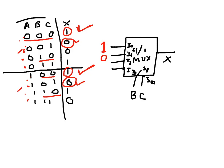For I2, where B is 1 and C is 0, I look at the two corresponding rows. The output is 0 for one and 1 for the other — it is changing. I can see that when the output is 0, A is 0, and when the output is 1, A is 1. So the output follows A, and I apply A at I2.